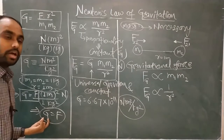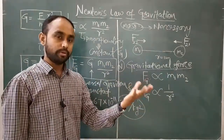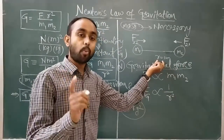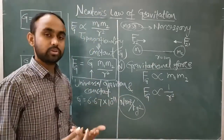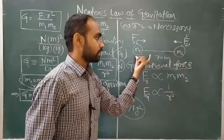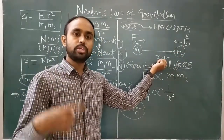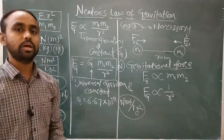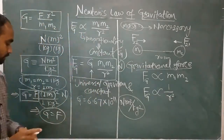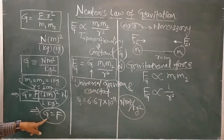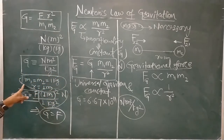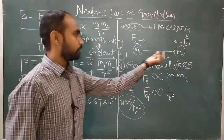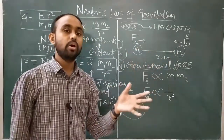G is nothing but the force itself, provided M1 and M2 must be 1 and the separation between those two masses must also be 1 meter. So if two unit masses are separated by unit distance and we measure the force experienced by one of the masses, that force value is nothing but G, the universal gravitational constant.